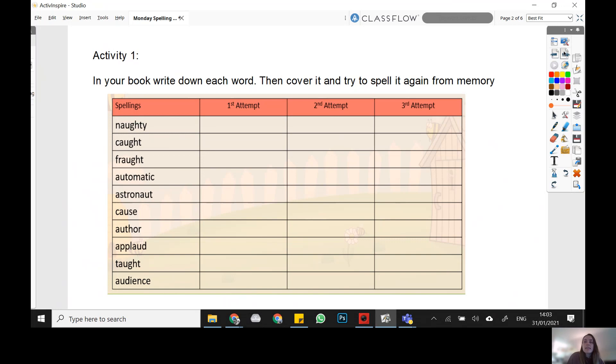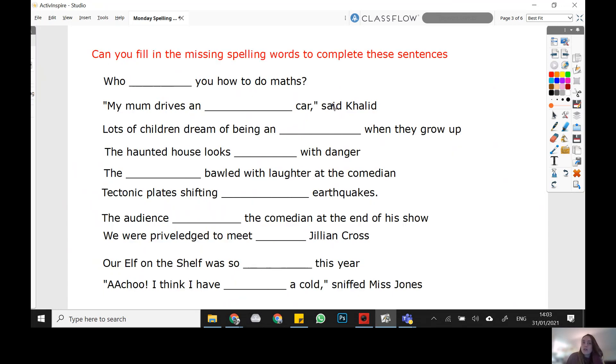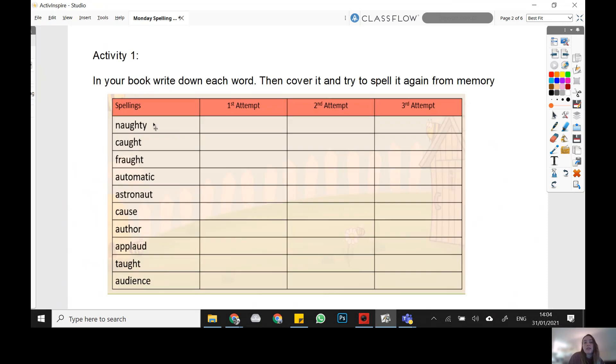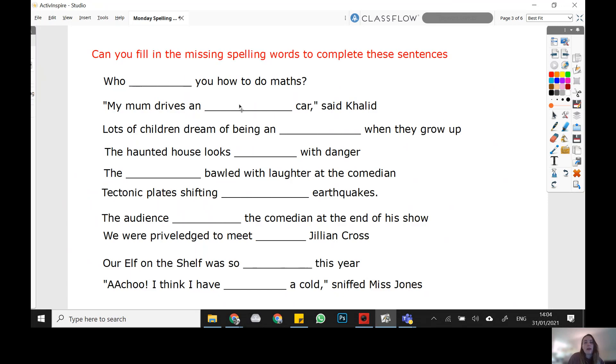Okay, our next activity, can you take each of your spelling words and write these sentences to include the correct word? Who, mm, you, how to do maths. So using from that list that you have written in your book, it's probably going to be who taught you how to do maths. So write down each of those sentences with the correct spelling word. When you're ready to see the answers, come back and press play.